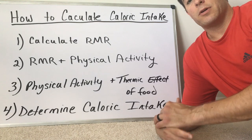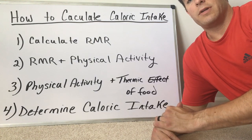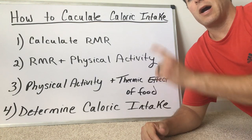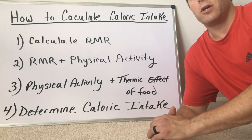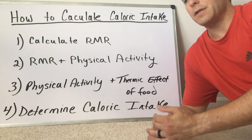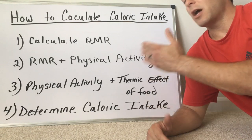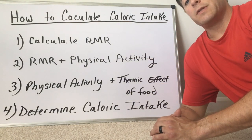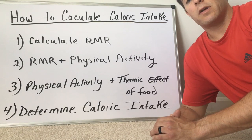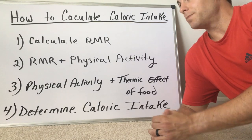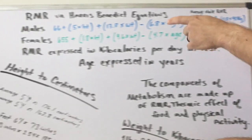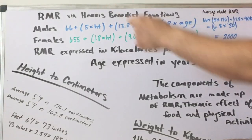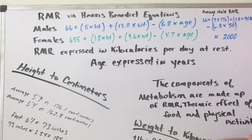What's up everybody, I'm Dr. Jordan Weber, and today you're going to figure out how to calculate your caloric intake. The first thing you're going to do is calculate your resting metabolic rate, or your RMR. You're going to use the Harris-Benedict equation for that, as you see here at the top of the board.